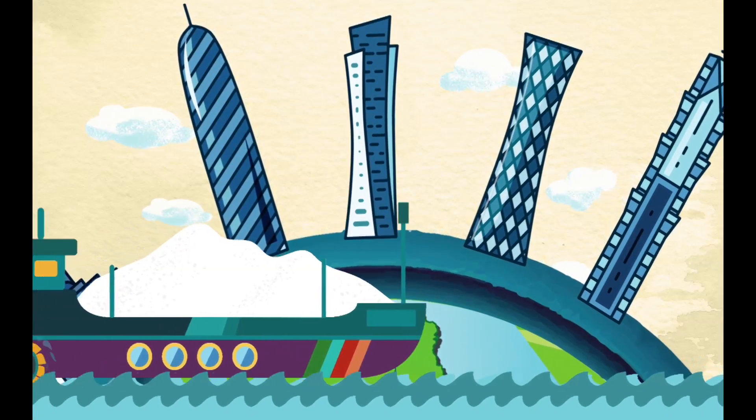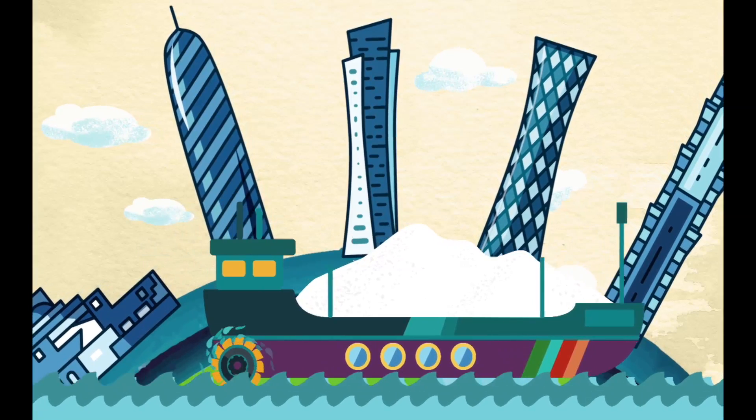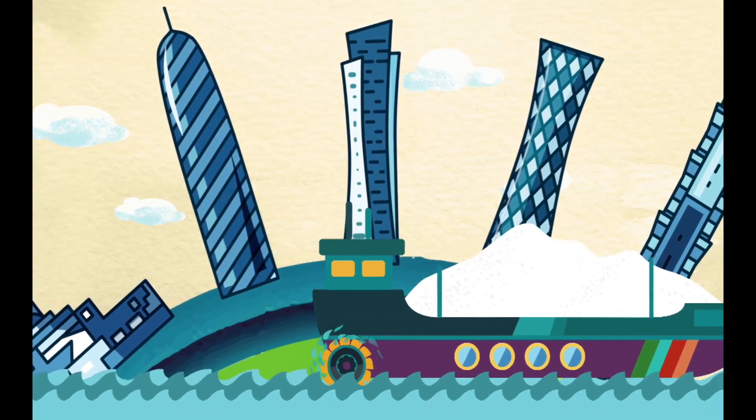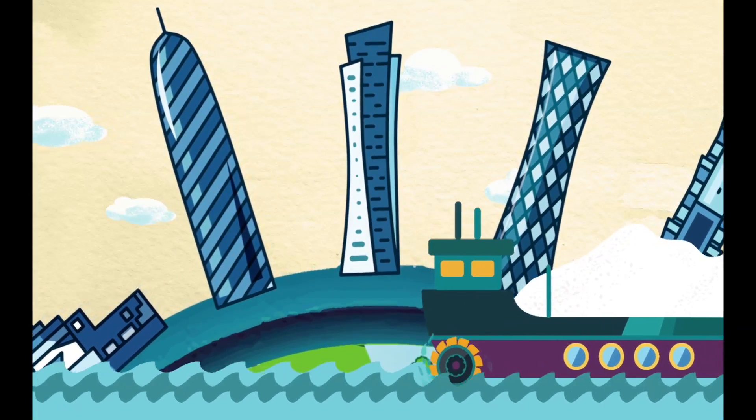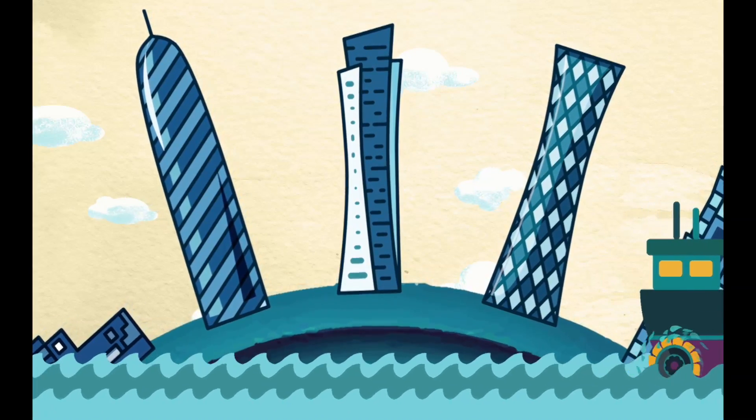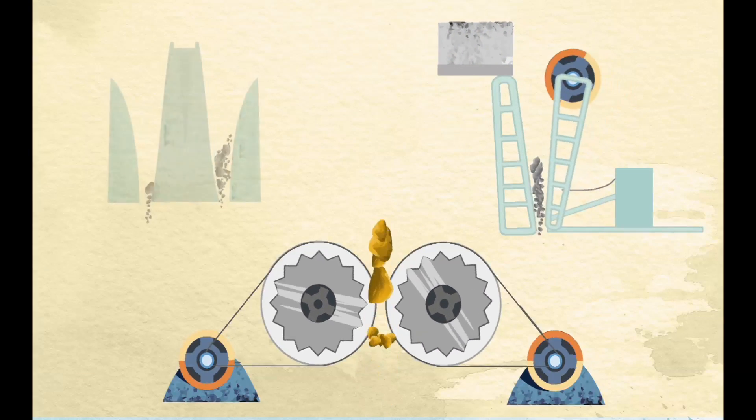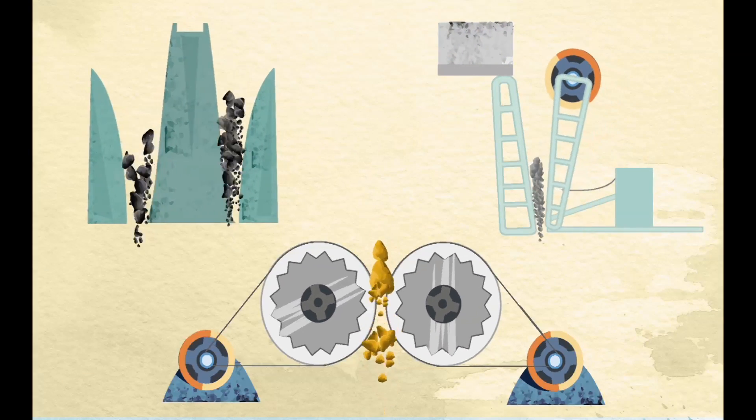Qatalum's complex facilities include a captive power plant. The cast house produces ISO-certified value-added extrusion ingots and foundry alloys that meet the stringent quality standards of Qatalum's global customer base. Raw materials essential to the production of aluminium arrive at Qatalum's facilities from a range of global suppliers.